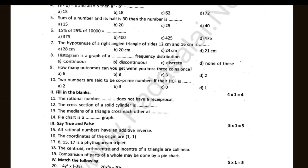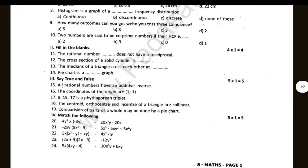The 8th question is about interior angles. Two numbers are said to be co-prime numbers if their HCF is dash. Dash does not have a reciprocal. Cross section of a solid cylinder. Medians of a triangle cross each other at dash. Pie chart is a dash graph.